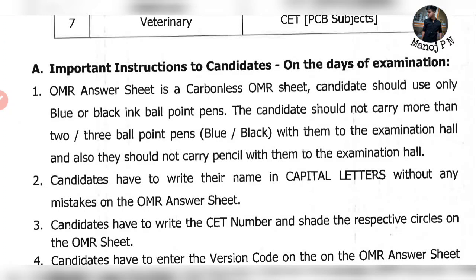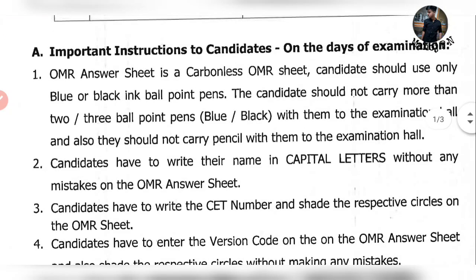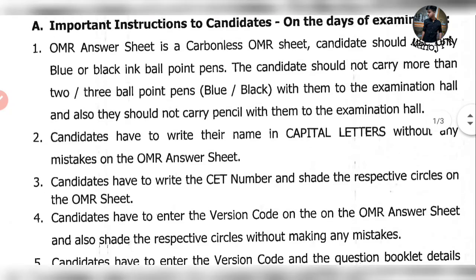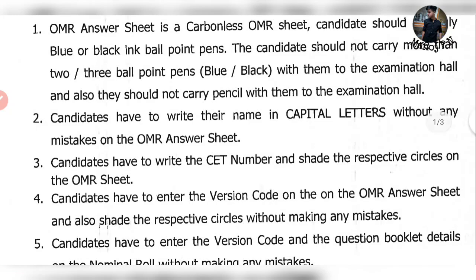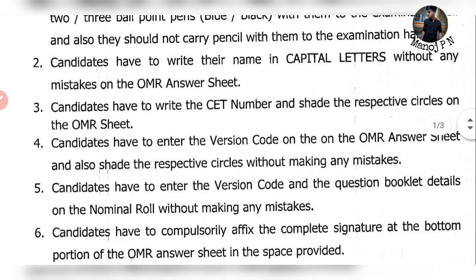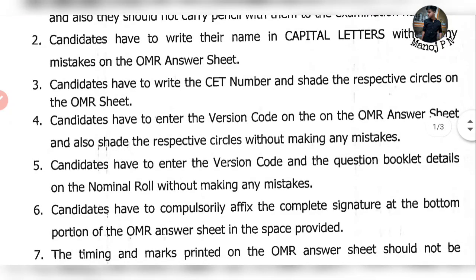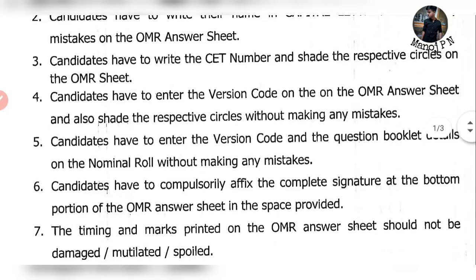Important instructions: if you have some exam papers, the OMR answer sheet is the primary one. Candidates should not carry more than two ball pens. They should not carry a pencil. Candidates have to write their name in capital letters without any mistakes. The OMR sheet requires your name in capital letters. Candidates have to write the CT number and shade the respective circles on the OMR sheet.